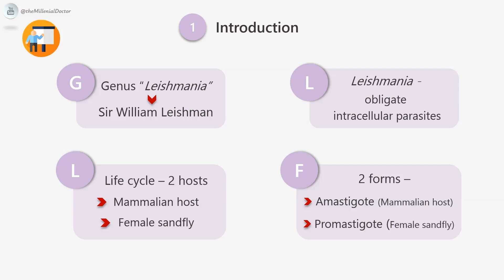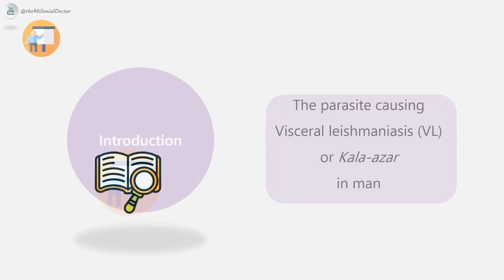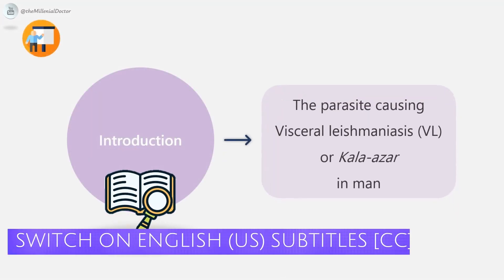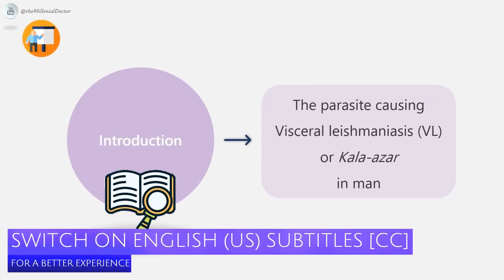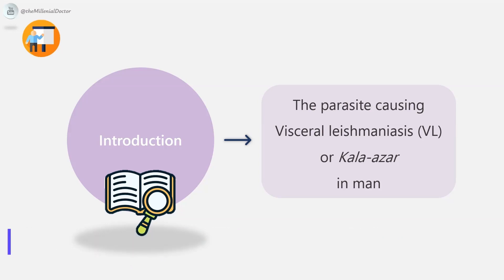The amastigote has an ovoid body containing a nucleus and kinetoplast. In the sandfly, they occur in the promastigote form, with a spindle-shaped body and a single flagellum arising from the anterior end. Leishmania donovani causes visceral leishmaniasis or Kala azar, and also the condition post-Kala azar dermal leishmaniasis, also called PKDL.